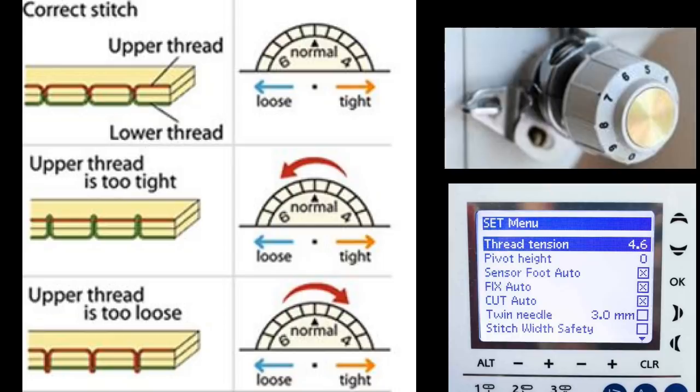If we go to this second scenario where your upper thread is too tight, you can see how it's pulling the bobbin thread up to the top. In this case, you want to lower the tension on your tension dial or on the screen. In the third scenario, you can see where the upper thread is too loose and it's being drawn down to the back of your quilt. When that happens, you need to increase your thread tension.